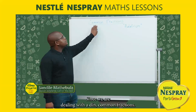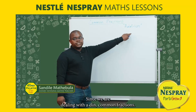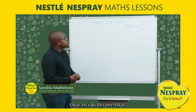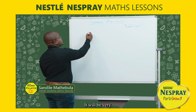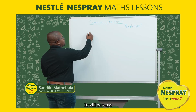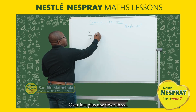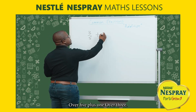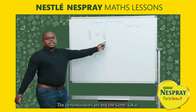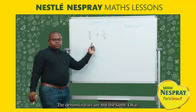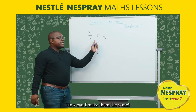Since we are dealing with adding common fractions, let's do this one: 3 over 5 plus 1 over 3. The denominators are not the same, so I must check how I can make them the same.